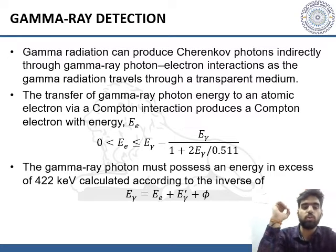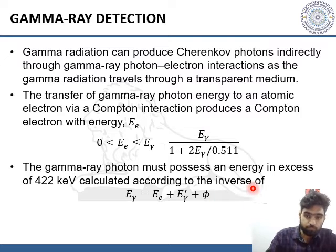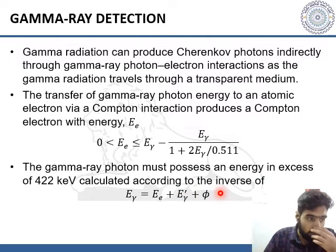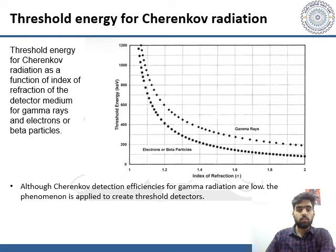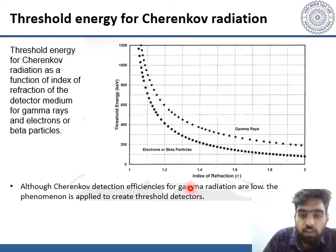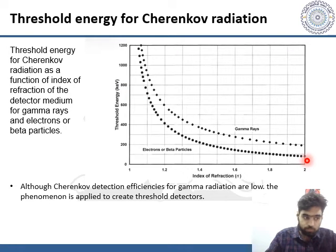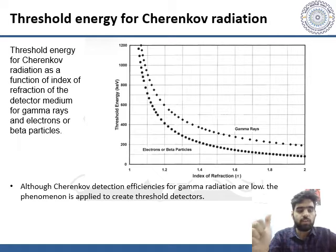This is given by the Compton scattering electron energy at 180 degrees. The gamma ray photon must possess an energy in excess of 422 kiloelectron volts, calculated according to the inverse of the above expression. Here, E-gamma is the required energy, E is the Compton electron energy, E-gamma-prime is the energy of the Compton scattered photon, and phi is the electron binding energy. The graph represents the variation of threshold energy with the index of refraction for gamma rays and electrons or beta particles.